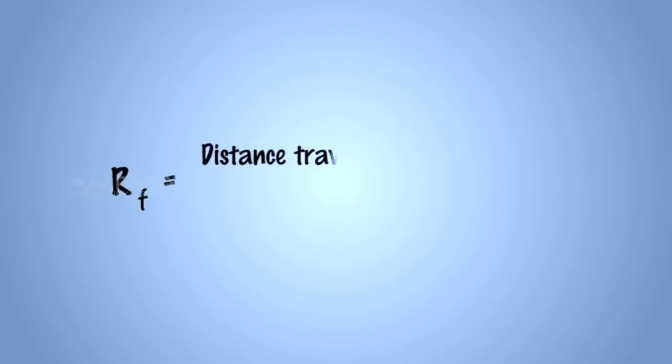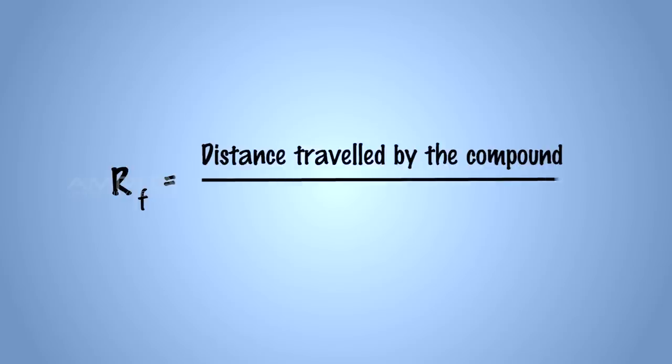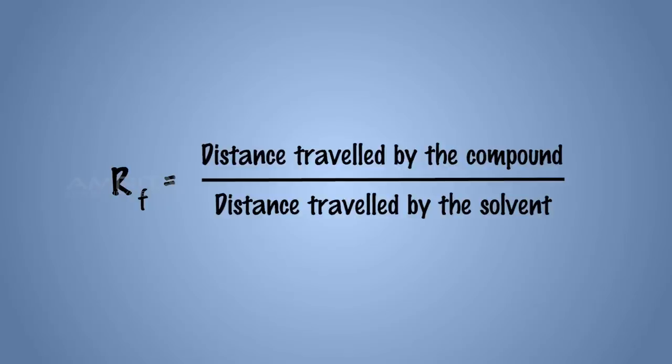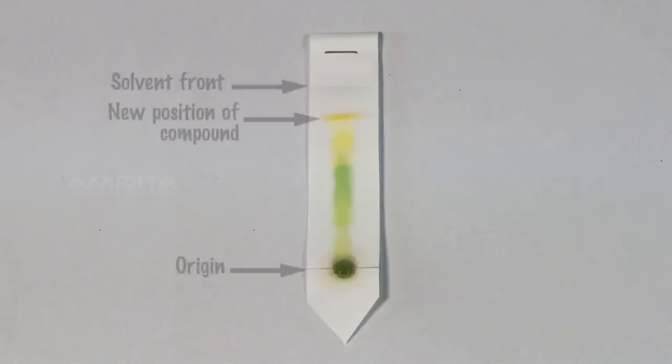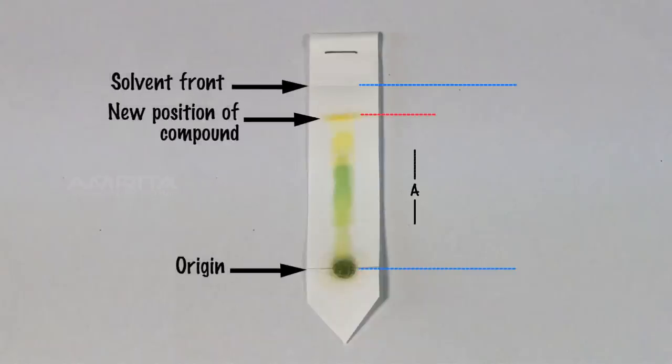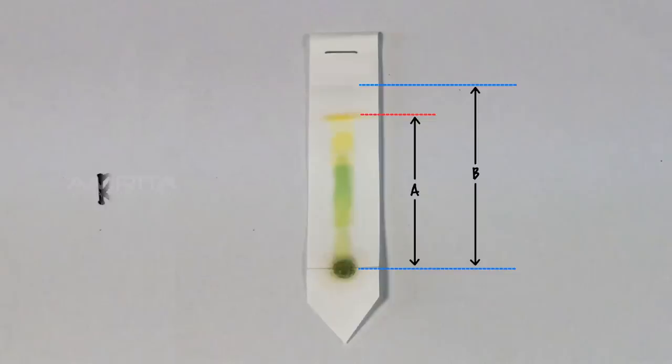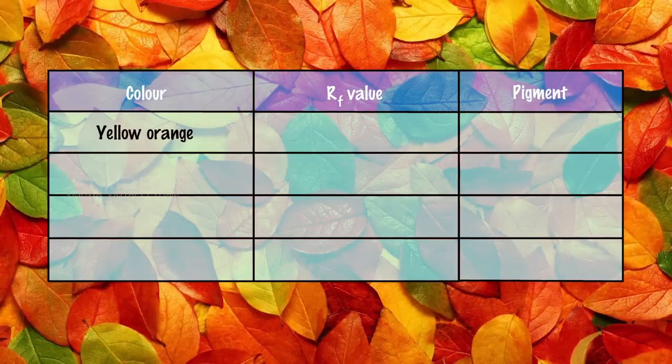Calculations: RF value of each pigment spot can be calculated by the equation: RF equals distance traveled by the compound divided by distance traveled by the solvent. Measure the distance of each pigment band from the loading spot and also the distance traveled by the solvent. Calculate the RF value using the equation and record the values into a table.